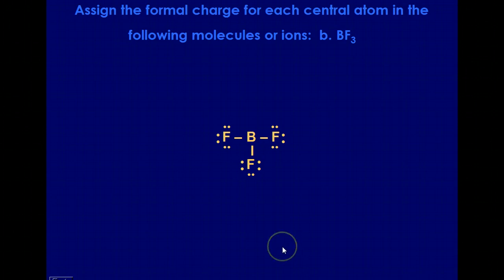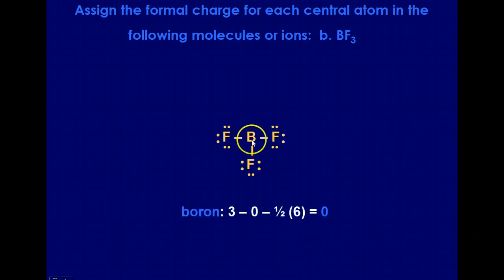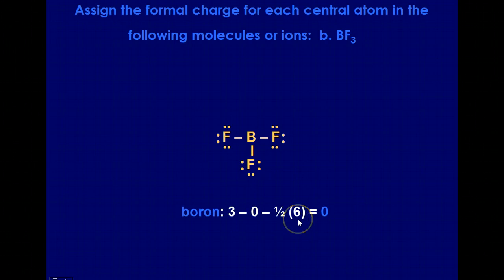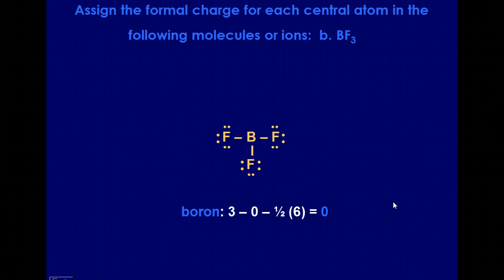Here we look at BF3. This time we have a true central atom, boron, and this helps us justify why boron is truly stable with three pairs of electrons. Boron starts with three valence electrons. It does not have any lone electron pairs assigned to it, so that's zero. It has three bonds between it and each of the fluorine atoms, giving six shared electrons. The difference between half of six and three is zero. If we had BF4 with a lone pair on boron, the formal charge would become negative — confirming that boron is truly stable with just three pairs.